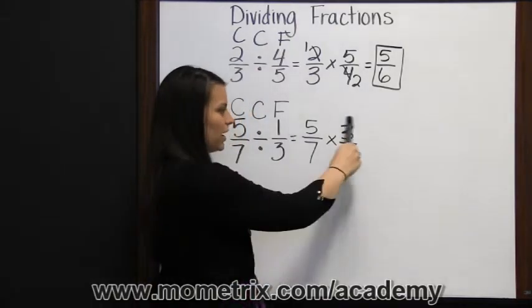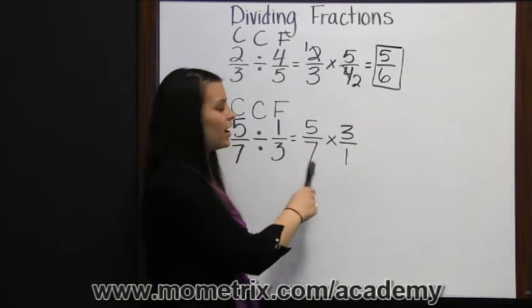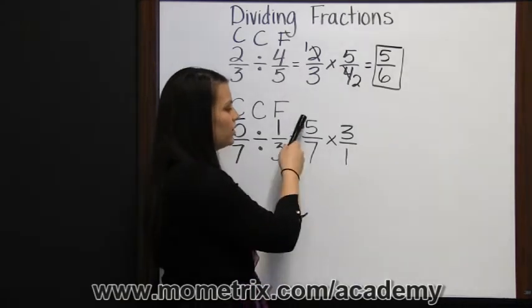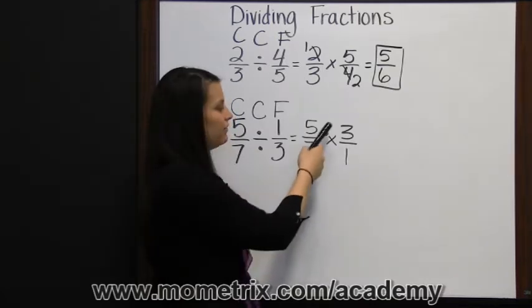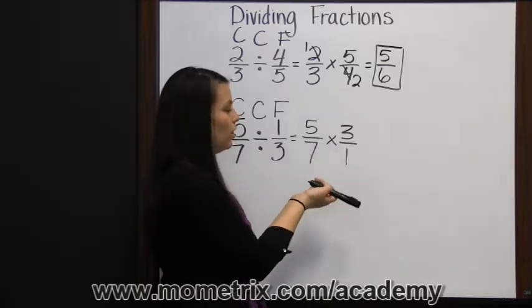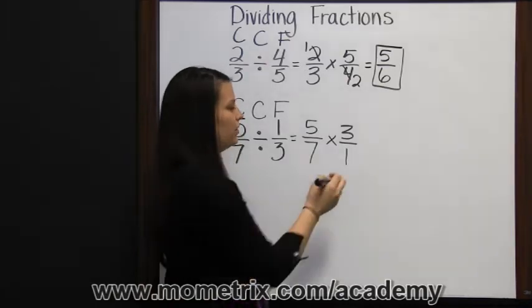Now we can just multiply our numerators and multiply our denominators. In this fraction, there's nothing I could cross-cancel. Five and one don't have a GCF of anything other than one, and three and seven don't have a GCF of anything other than one.